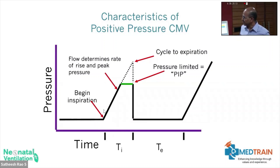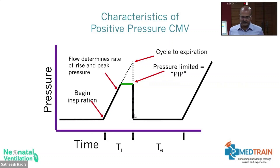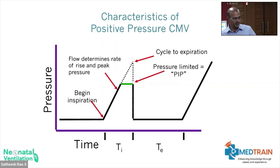If the flow is very fast — a high flow like 10 liters — you may get a square waveform. We'll come to the next slide to show that. In pressure-limited ventilation, the pressure cuts off as a plateau through the inspiratory time, then drops at end-inspiration. In modern modes like pressure support ventilation, when the patient's flow drops to a certain level — like 15% — you get the end of inspiration.